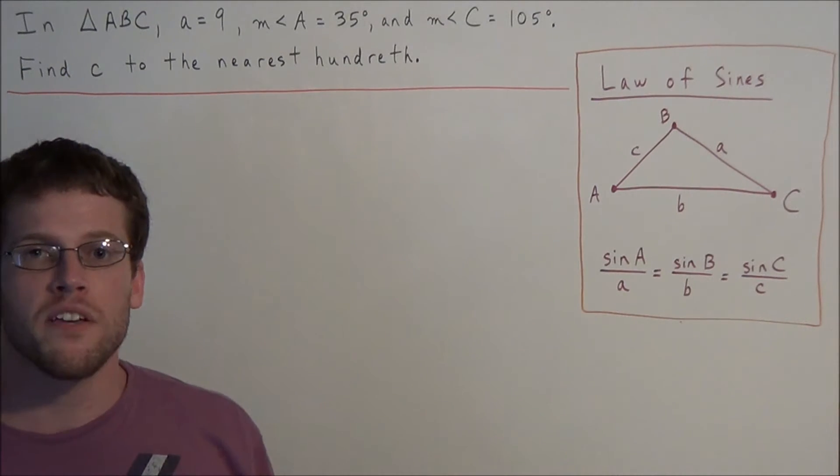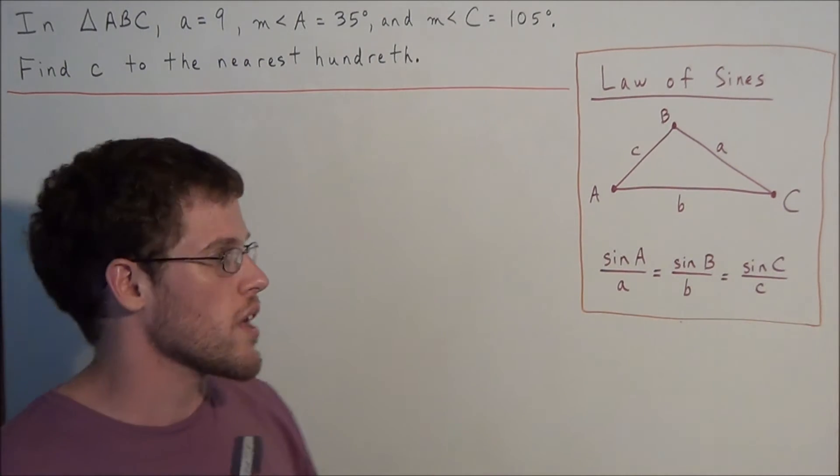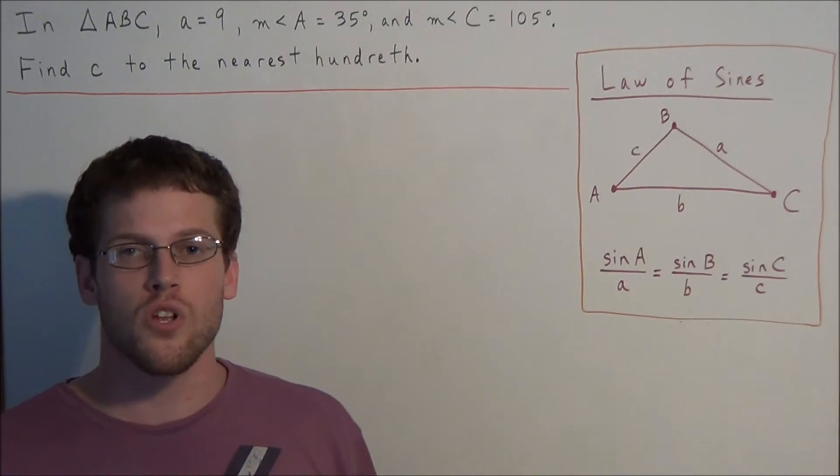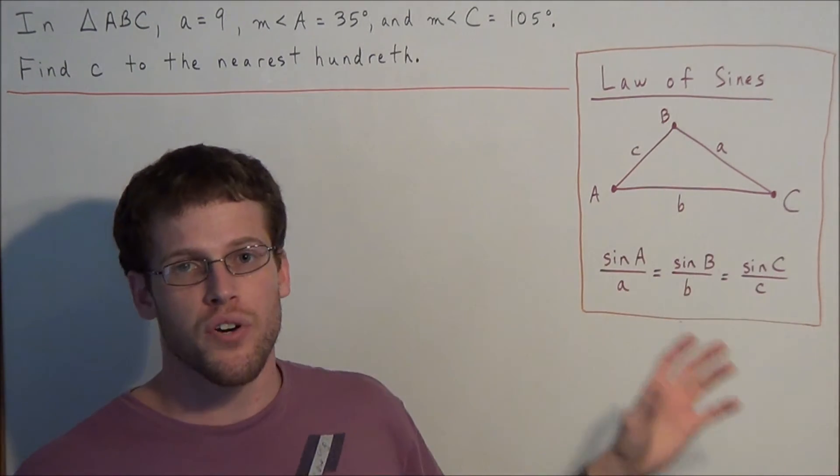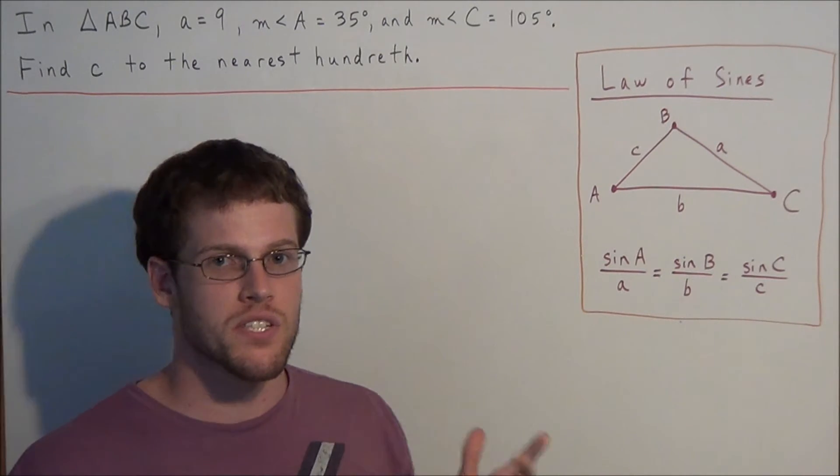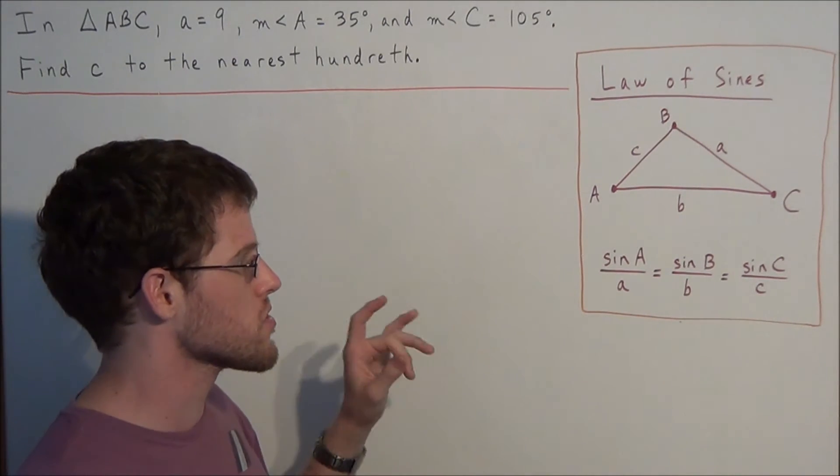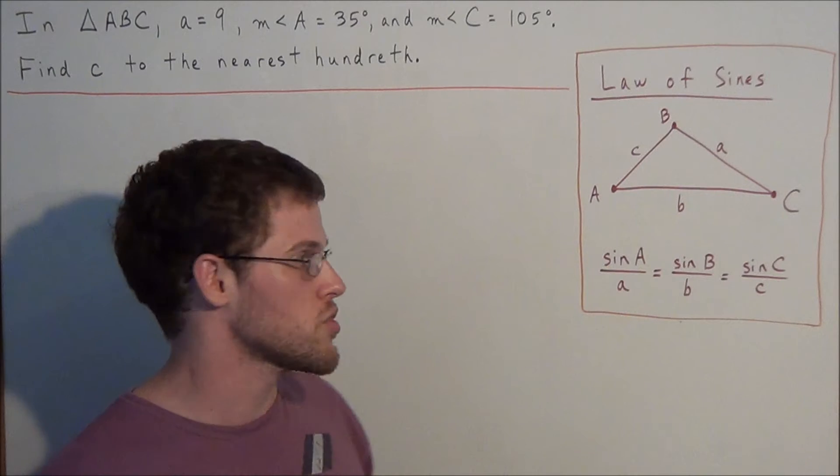For this problem we're going to make use of the law of sines. We would use the law of sines when we have all of the interior angles of a triangle and one of the sides. So this is a much easier alternative to find one of the missing sides of a triangle.